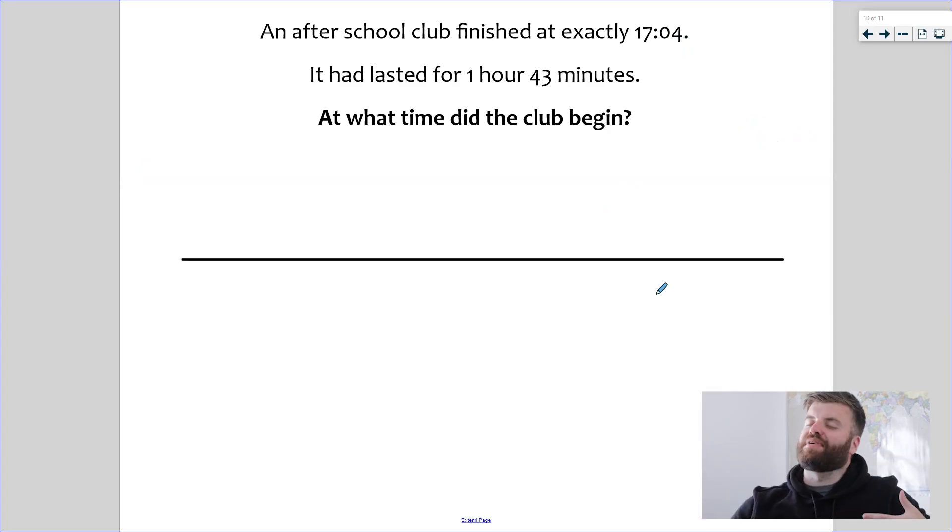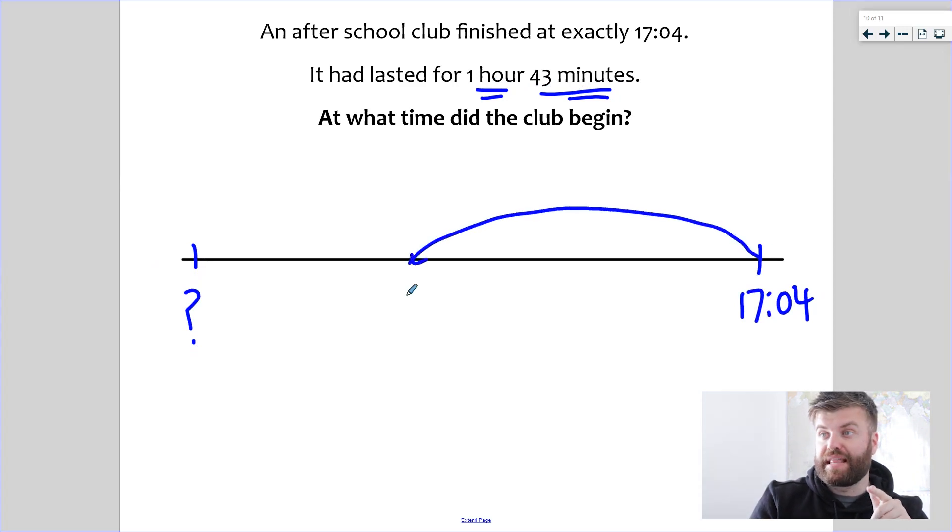Okay. Again, nice breath because I know I'm going to get this question right. The club finished at 17:04. This time the question is slightly different because we're given the duration. We need to find the start time. Don't fret. We can use the same technique as before using jumps. Now, if it lasted for one hour 43, there are lots of different ways we could jump backwards. But I'm going to show you the way that I prefer. I'm going to take off the hour straight away. And that's going to take us back to 16:04. So now I know I've taken an hour off. I've just got 43 left for the final jump.